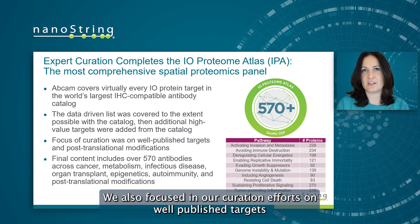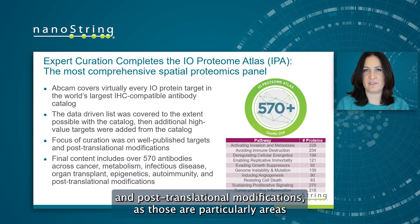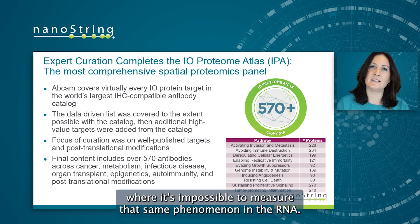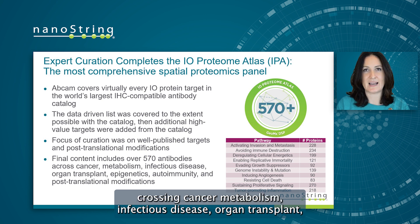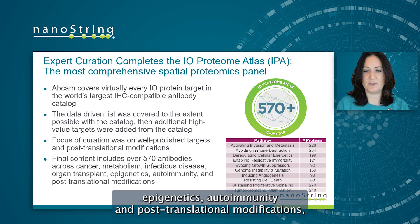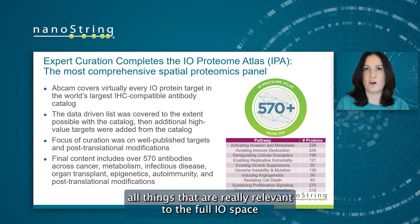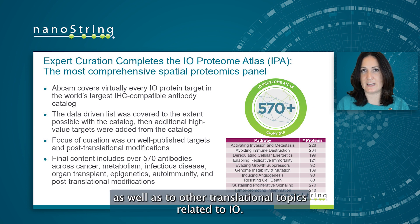We also focused our curation efforts on well-published targets and post-translational modifications, as those are particularly areas where it's impossible to measure that same phenomenon in the RNA. In the end, we cover about 570 protein targets, crossing cancer, metabolism, infectious disease, organ transplant, epigenetics, autoimmunity, and post-translational modifications — all things that are really relevant to the full IO space, as well as other translational topics related to IO.